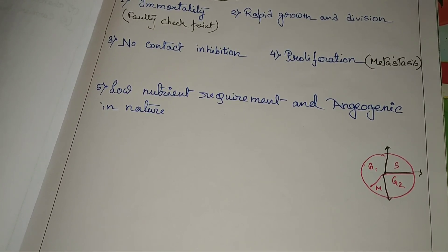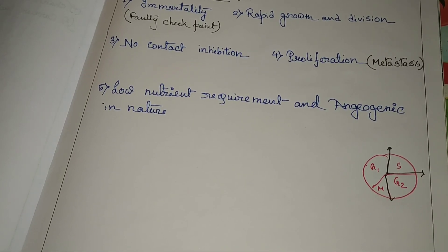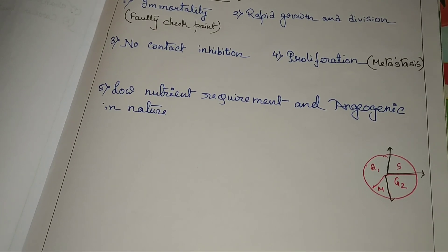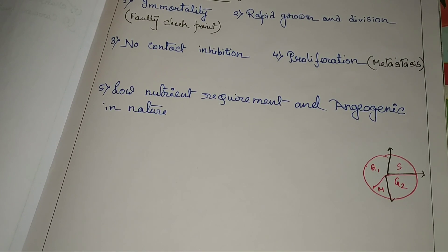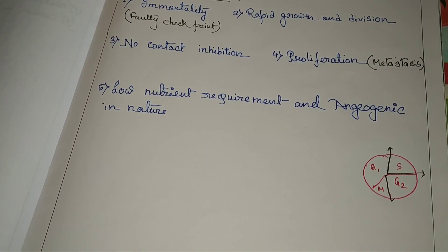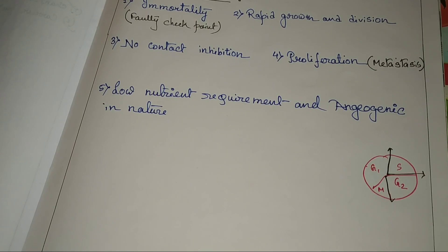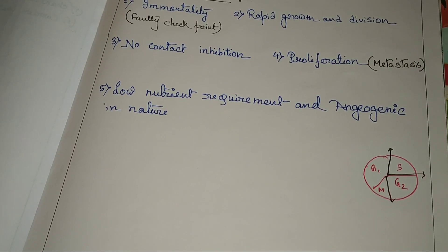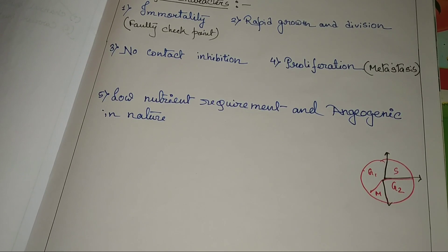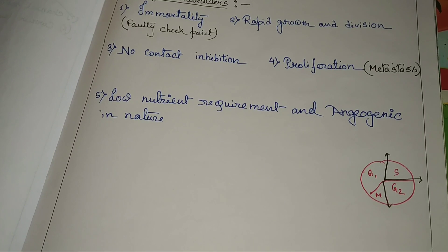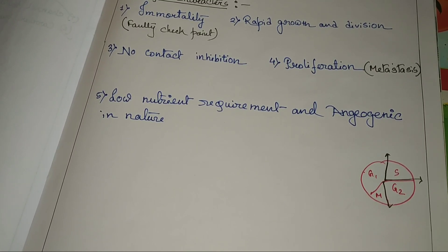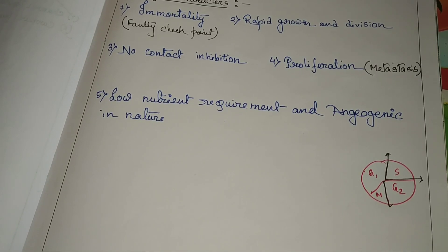Faulty checkpoint means the checkpoints are unable to check that point. That means in the case of a cancerous cell, these checkpoints become faulty so that unhealthy cell growth occurs. The checkpoints are not able to check whether the process was done right or wrong. Then the cell goes into a faulty phase, forming cancerous cells, tumorous cells, and malignant tumor cells. This is the first characteristic of the cancerous cell.